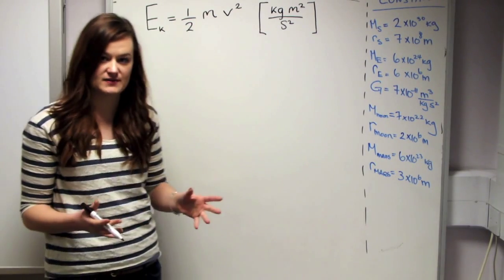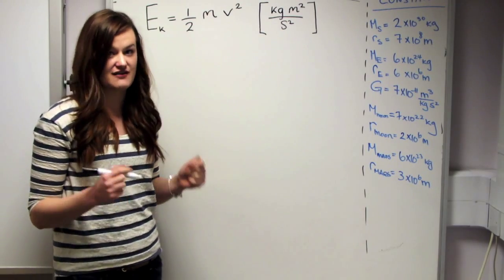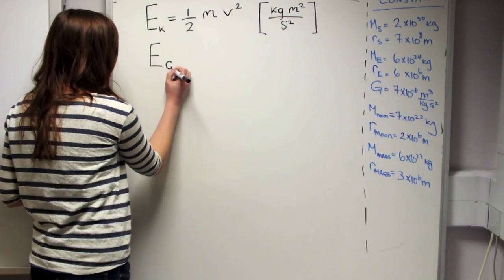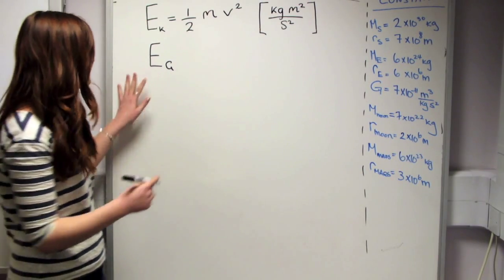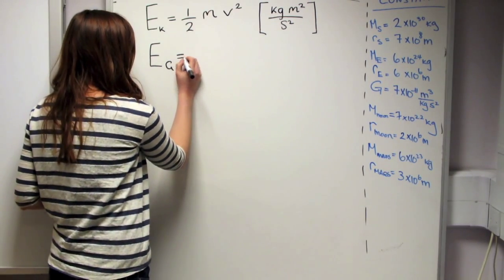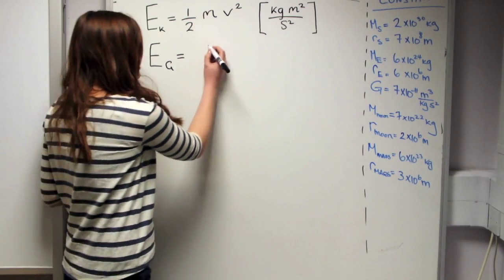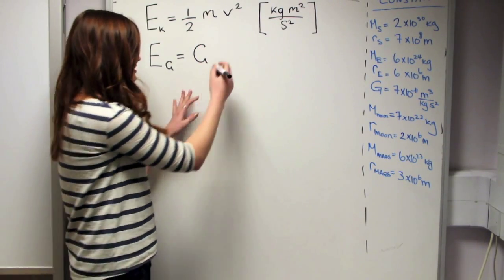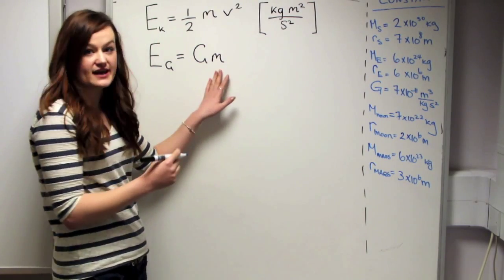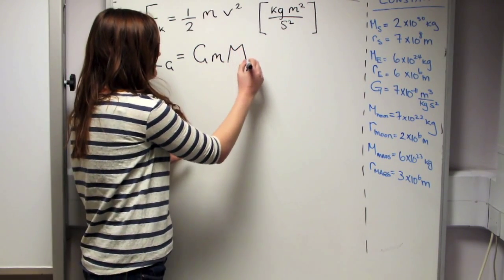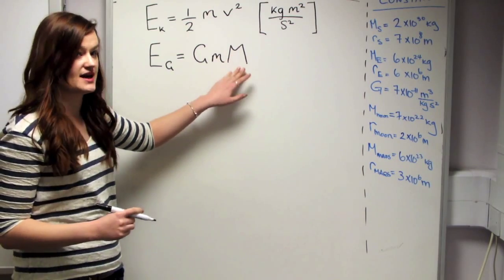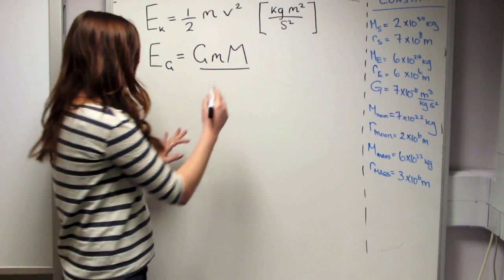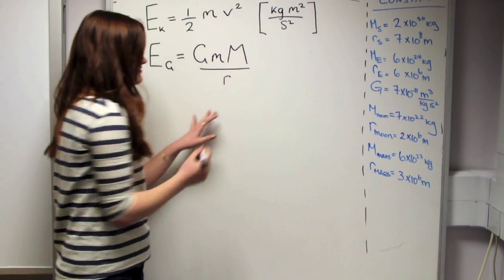The second thing that we need for this is the gravitational potential energy of the Earth. So I'll write that as EG for gravitational energy. And this is equal to Newton's constant, which I'll write as big G, times the mass of the ball again, times the mass of the Earth, which is big M, divided by the radius of the Earth, which I'll write as R.